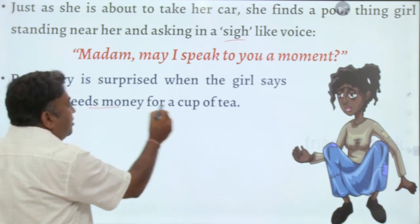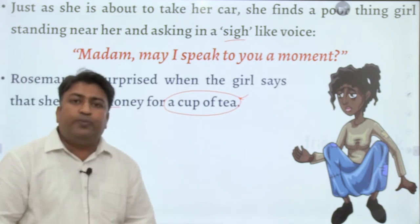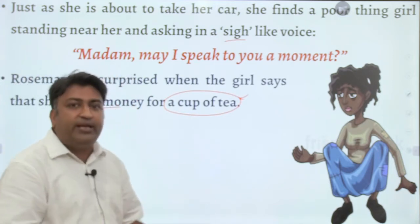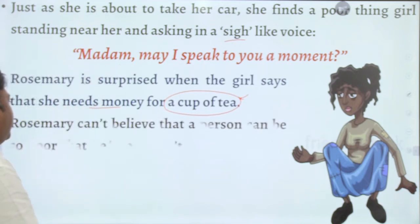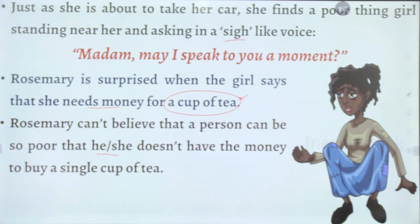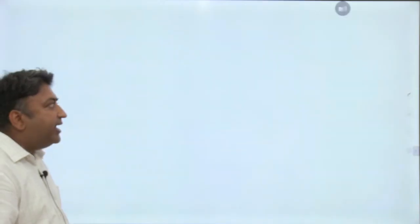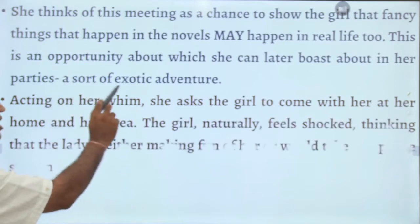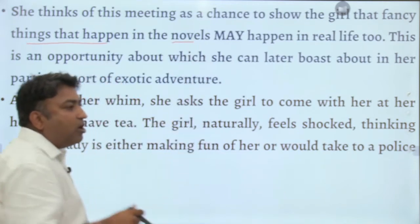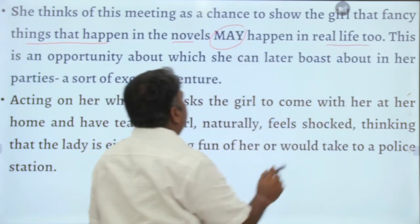The girl says she needs money for a cup of tea — and from this we have the title of the story. Rosemary is astounded; she cannot imagine there can be a person in this world who does not have money even for a cup of tea. Suddenly an idea strikes her fancy: she thinks of this meeting as a chance to show that the fancy things which happen in novels or movies — like Robin Hood or Cinderella — can also happen in real life.